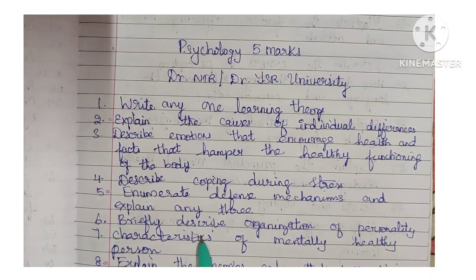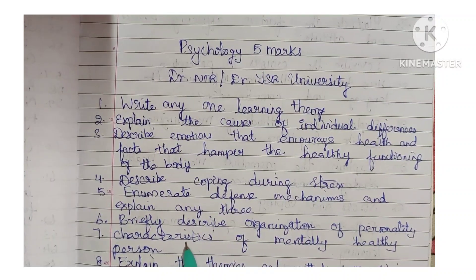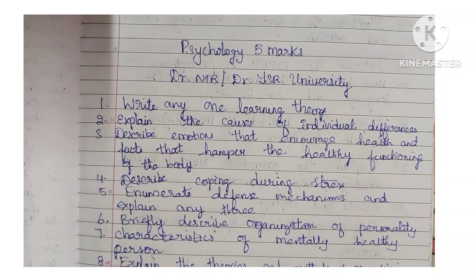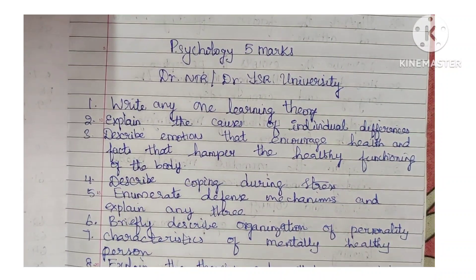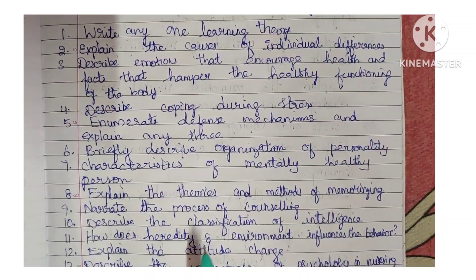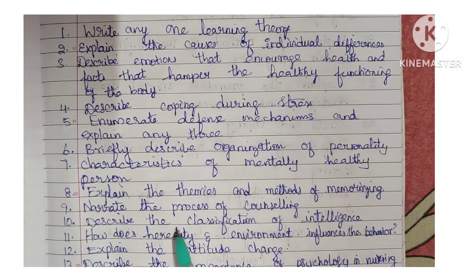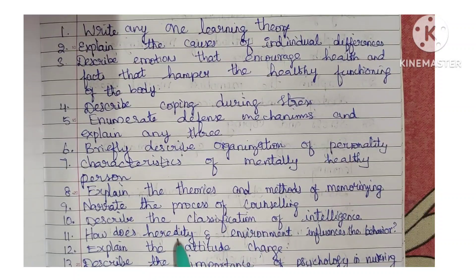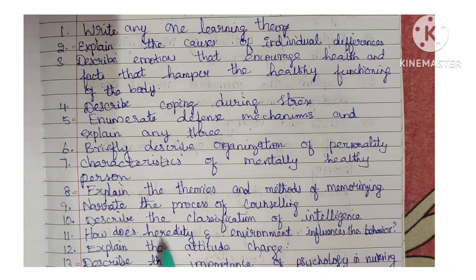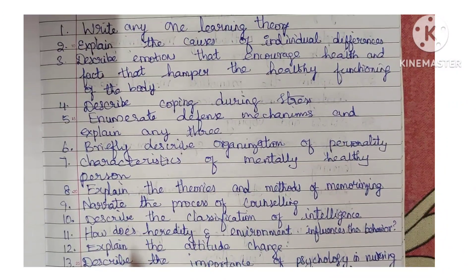Next question: enumerate defense mechanisms and explain any three defense mechanisms. Next: briefly describe organization of personality. Next: characteristics of a mentally healthy person. Next: explain the theories and methods of memorizing. Next: narrate the process of counseling. Next: describe the classification of intelligence.